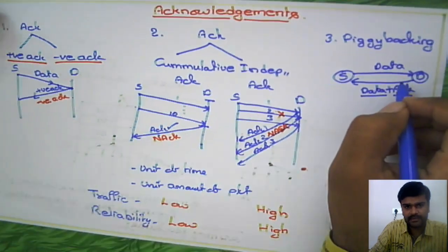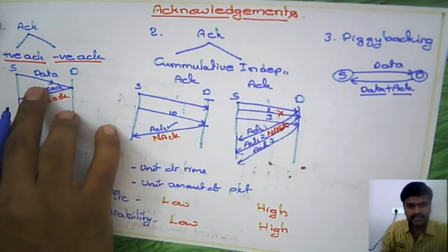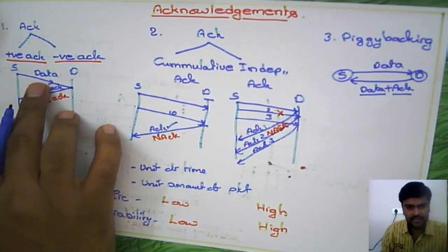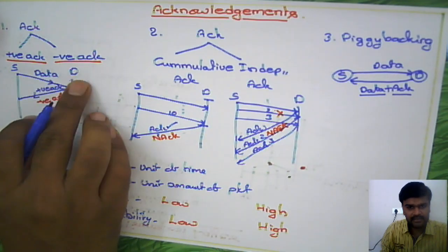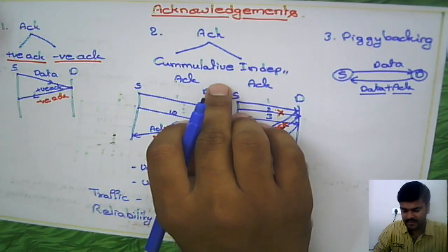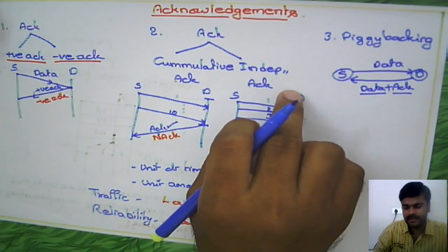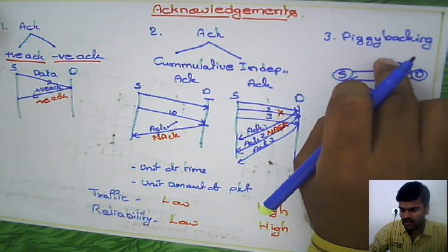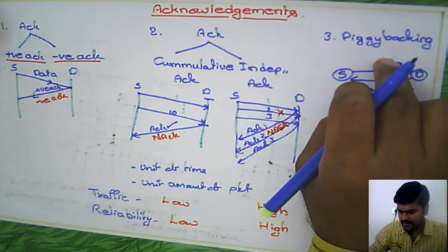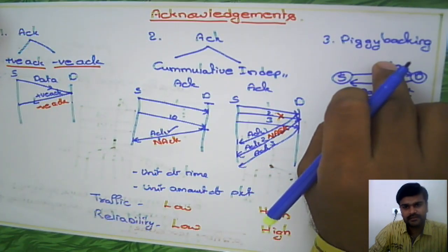So that's piggybacking. In total, we have seen three categories of acknowledgements: first, positive acknowledgement and negative acknowledgement; second, cumulative acknowledgement and independent acknowledgement; and third, piggybacking. That's all about acknowledgements.